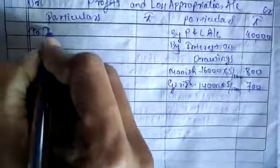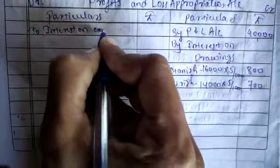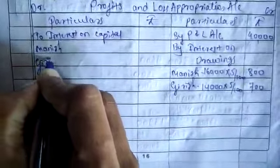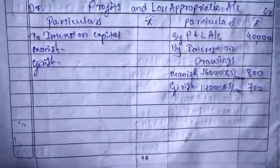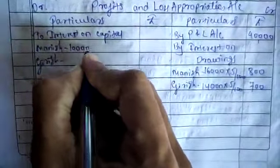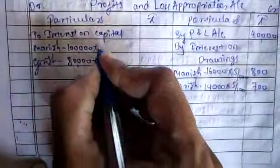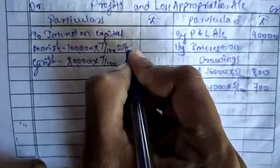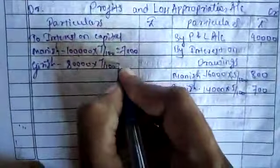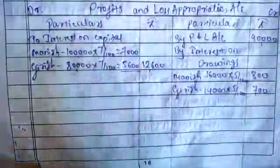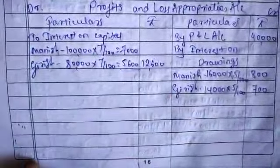That 41,500 should be spent on various expenditures on the debit side. The first expenditure is interest on capital for Manish and Girish. Manish's capital investment is 1 lakh and Girish's is 80,000. The rate of interest is 7%, so that is 7,000 for Manish and 5,600 for Girish. Total interest on capital is 12,600.